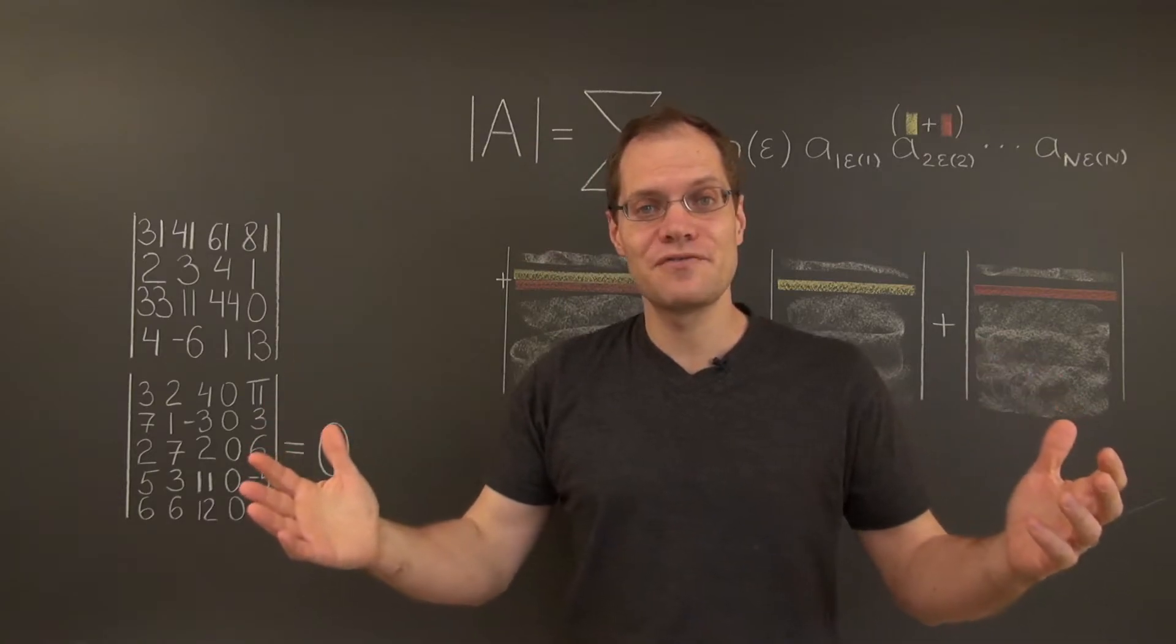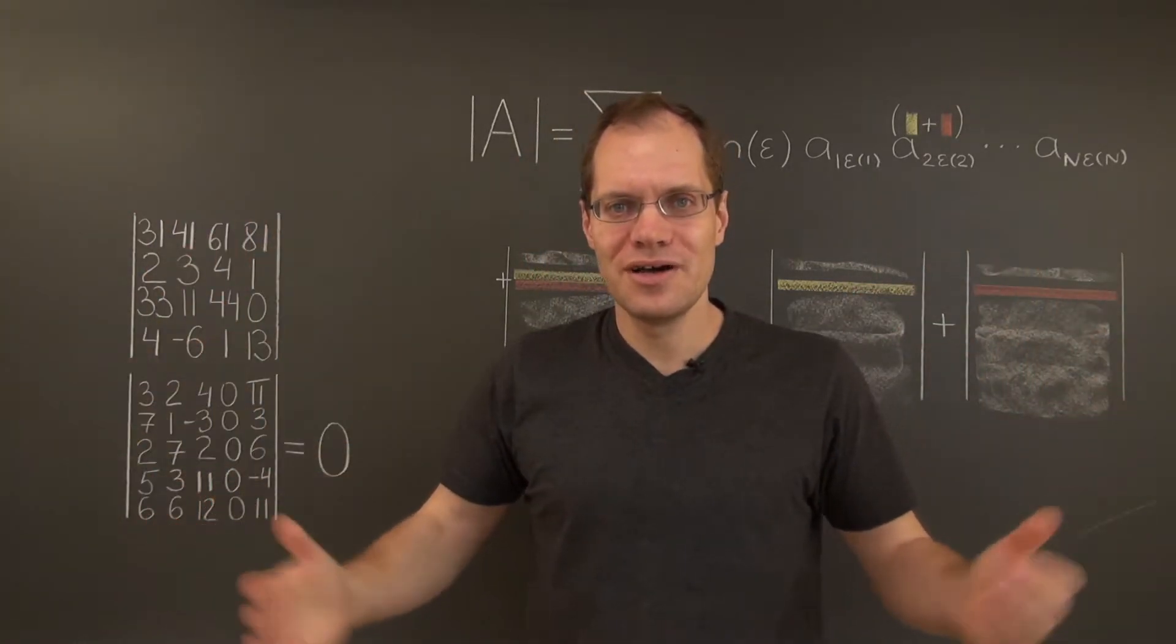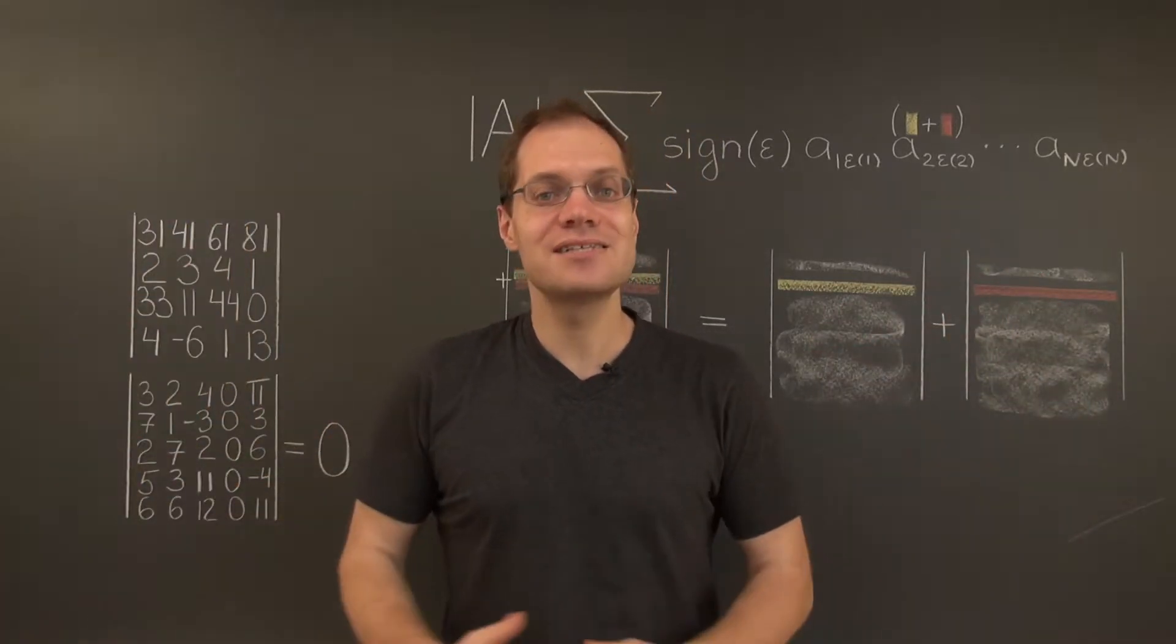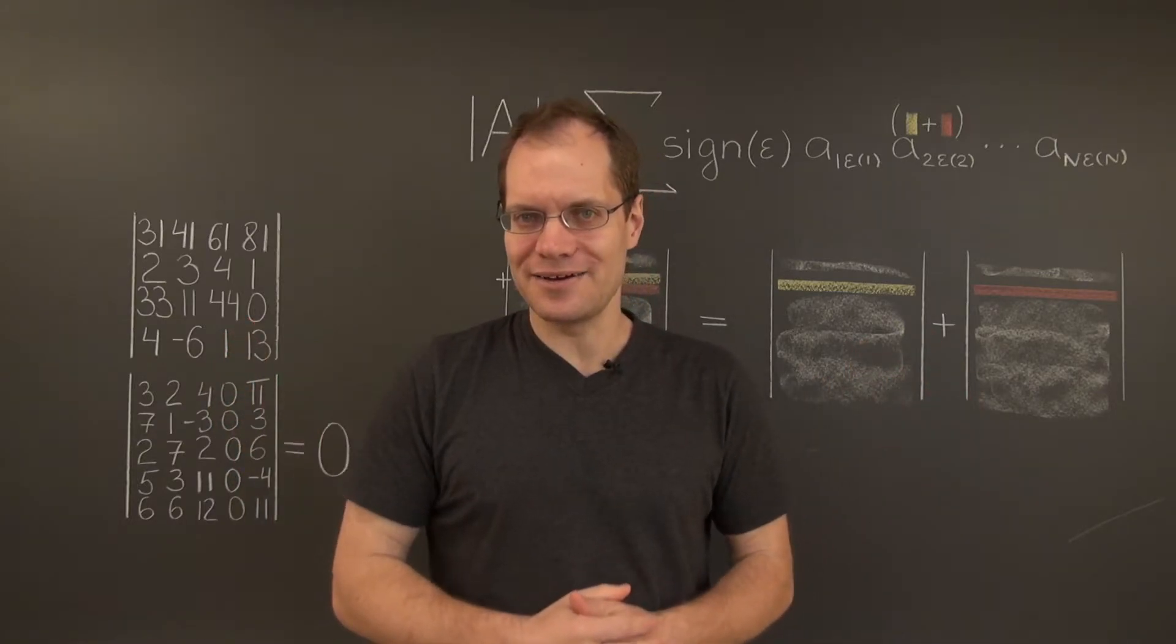And of course you could have broken up the first row in any other way, or any other row in any way you want, as long as you do it one row at a time. So that's the first part of linearity.